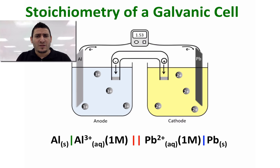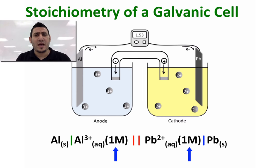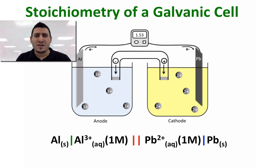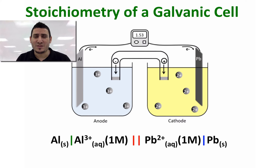Consider the following galvanic cell. We are operating here at standard conditions since the concentrations of aluminum and lead are equal to 1 molar. As you can see, the 1 molar concentration is represented by 4 particles in each compartment. Today we will study the stoichiometry of a galvanic cell using particulate representation.